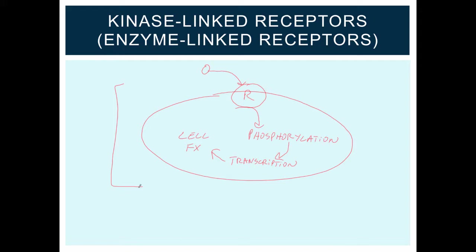Kinase-linked receptors work over the course of hours. So the time scale is a little bit longer than what we've seen so far for the other receptor types. And the reason that these receptors take so long to work is that we're actually getting changes in transcription and protein synthesis. And so these processes take a long time to initiate and execute. One example of a kinase-linked receptor is epidermal growth factor binding to the epidermal growth factor receptor.